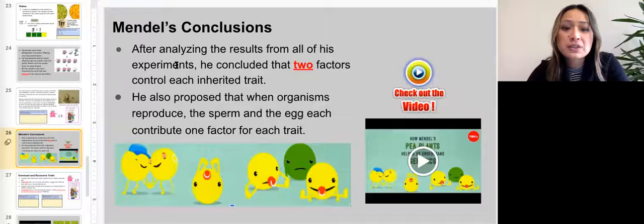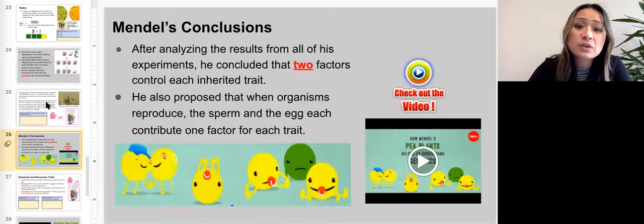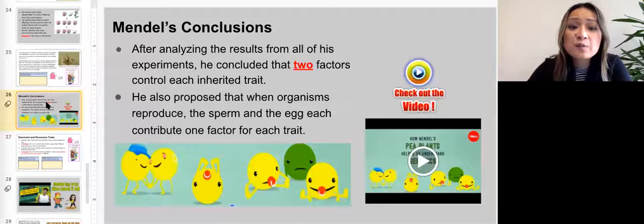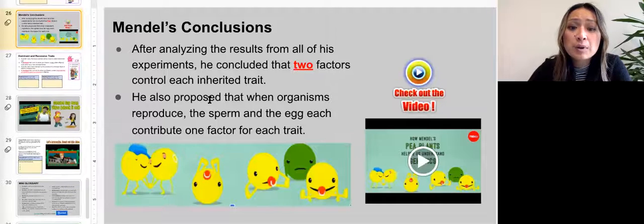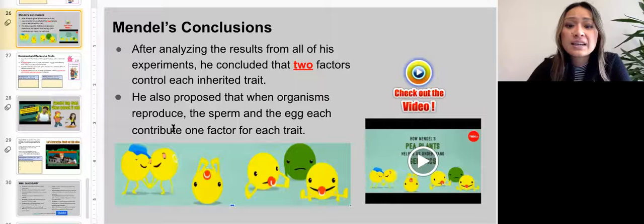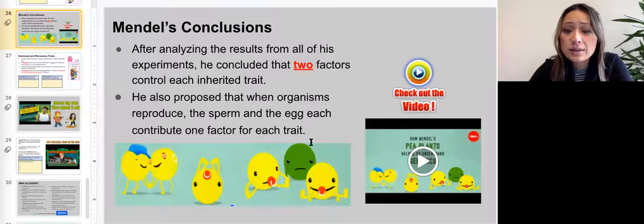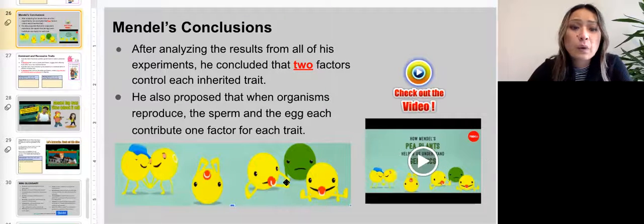Mendel's conclusions. After analyzing the results from all of his experiments, he concluded that two factors controlled the each inherited trait. He also proposed that when organisms reproduce, the sperm and the egg each contribute one factor for each trait. There's a video on the right for you to watch.